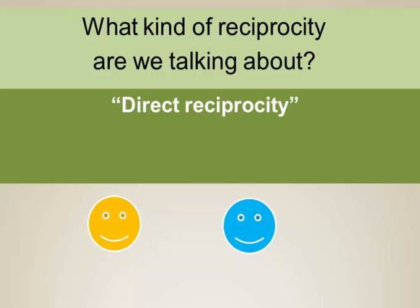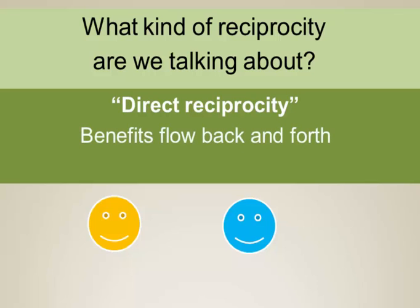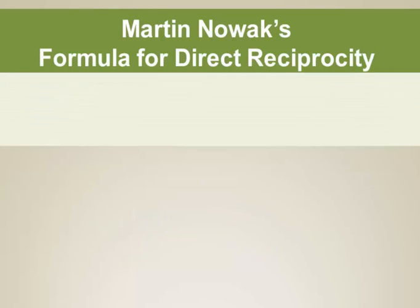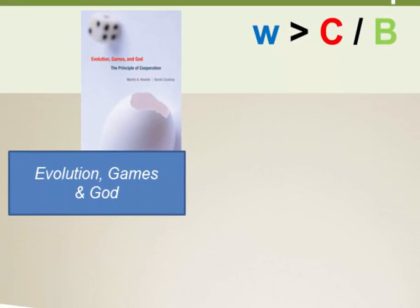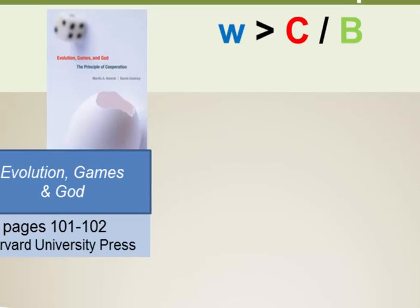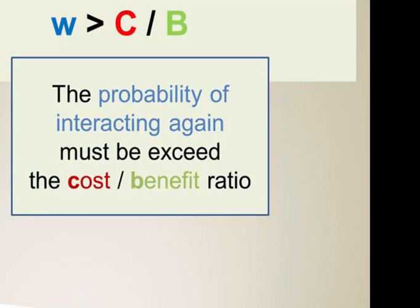So what we're asking with W is what's the probability that they can meet again and that the benefit that orange provides to blue can be reciprocated. It's important to specify the kind of reciprocity we're talking about, because reciprocity comes in several forms. What we're talking about in this presentation is what's called direct reciprocity, where the benefits flow back and forth between two partners. The mathematician Martin Nowak has a formula for defining when reciprocity is possible in this direct manner, found in his book Evolution, Games, and God, pages 101-102, by Harvard University Press. Nowak's formula is that W must be greater than the cost divided by the benefit, or the ratio of cost to benefit. The probability of interacting again has to exceed the cost-benefit ratio.